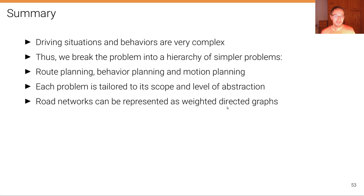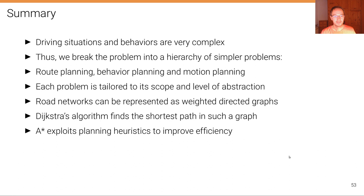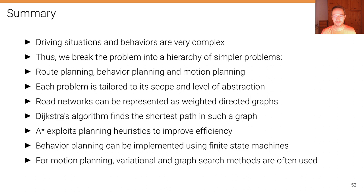Road networks can be represented as weighted directed graphs and we've seen that Dijkstra's algorithm finds the shortest path in such a graph. However, A star is even more efficient and exploits planning heuristics to improve its efficiency. We've also seen that behavior planning can be implemented using finite state machines, and for motion planning, variational and graph search methods are often used.